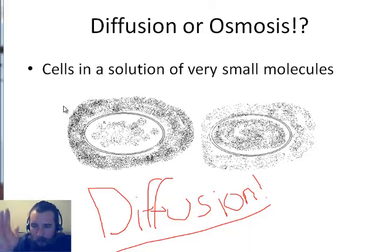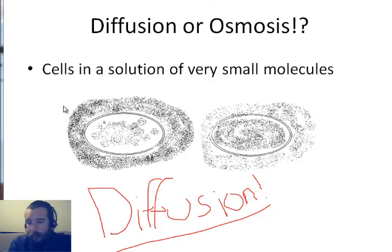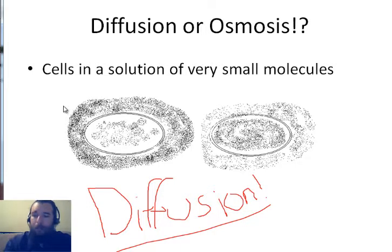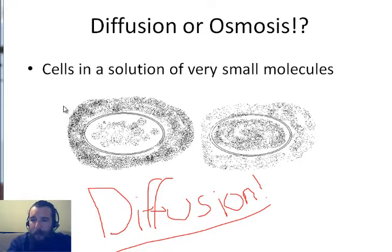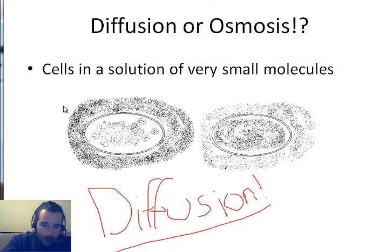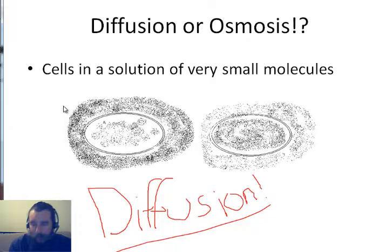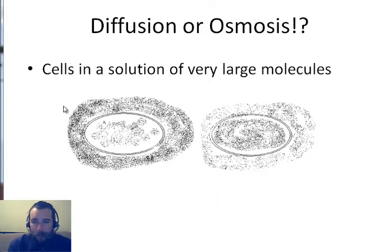Look at this cell over here in this solution — different cell, different solution. Which way are the molecules going to go, into the cell or out of the cell? They're going to go out of the cell because they're still moving high to low — that's passive transport — to even out the concentration.